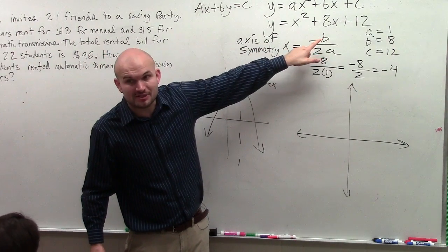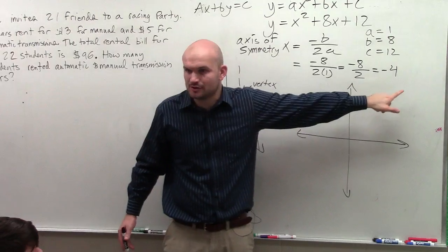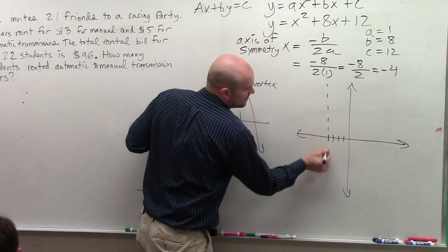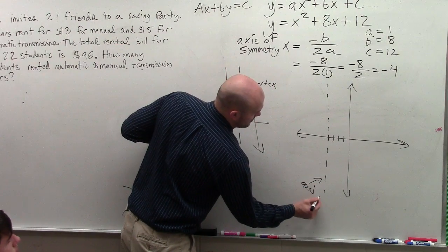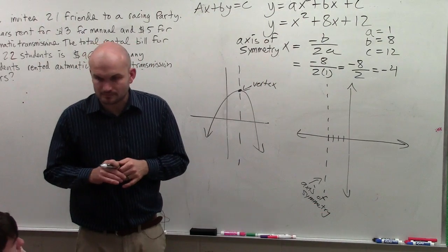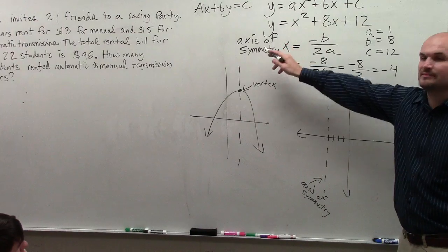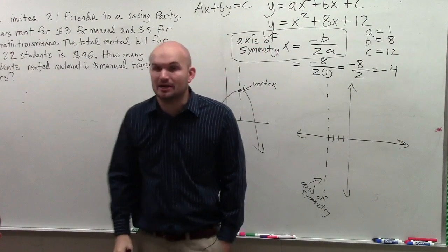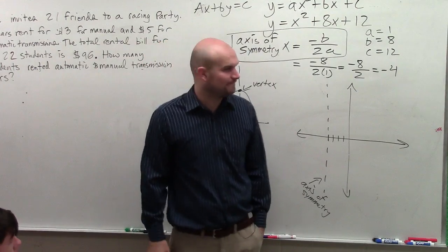So, I still do opposite of b divided by 2a, and I get x equals negative 4. Therefore, I go to x equals negative 4: 1, 2, 3, 4, and I draw my axis of symmetry. Does everybody see that? The axis of symmetry is x equals negative 4. Axis of symmetry always equals x equals opposite of b divided by 2a. Yes, you're going to want to have that memorized, because you are going to have to know how to do that. My apologies, it's been a long break.